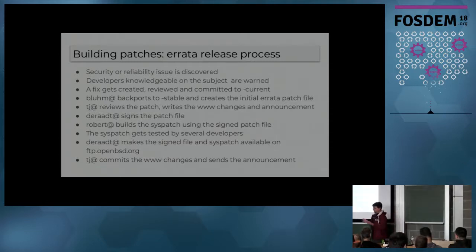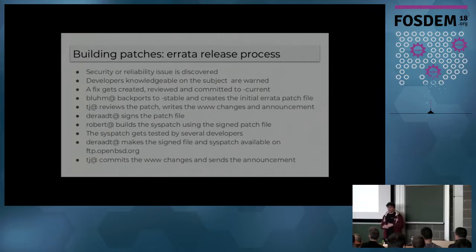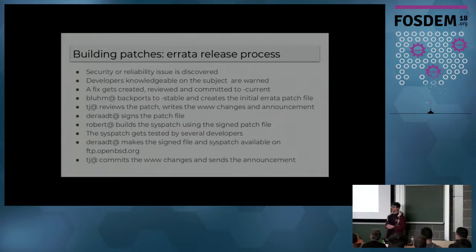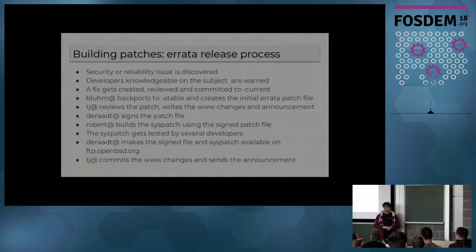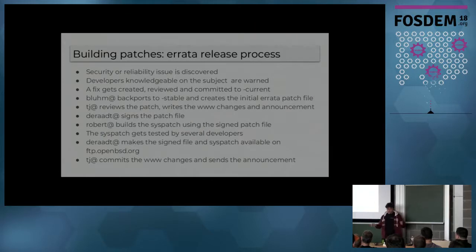That's how to handle the patches. Let's look at how the building of patches works. First, someone notices an issue with the code. They tell the developer there's a security issue. We create a fix, get validation and review, and it's committed to current. Then Bluhm will backport it to stable and create the initial errata file. TJ will then review the patch, write the errata changes on our website, and we create an announcement. Then Theo will sign the patch — only a handful of people are able to sign patch files. Then Robert will build the patch using the signed patch file. We test it and make it available on our mirrors.